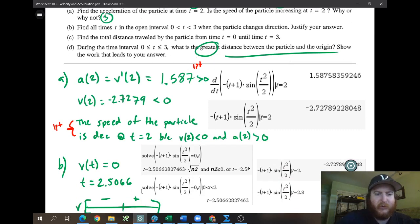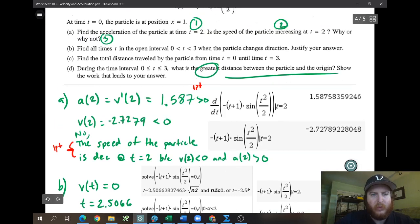If you did not write those numbers down, you don't get credit. So since it said, is the speed increasing? I guess we could have said no. No, the speed of the particle is decreasing at time 2 because the velocity was negative and the acceleration was positive. But again, saying just that is not enough. You need to also have those numbers.